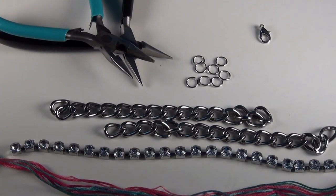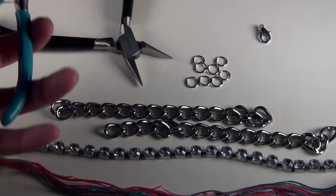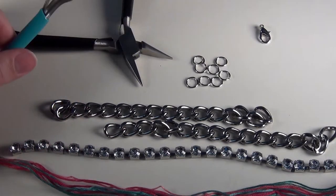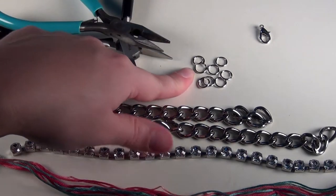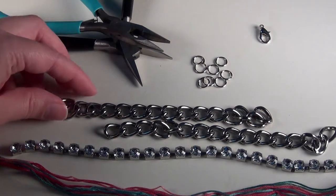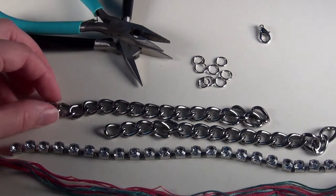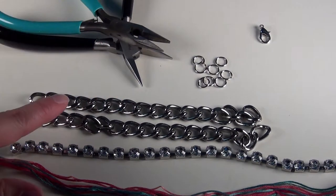For this you're going to need a pair of pliers. I'm actually using two because I happen to have them and it makes opening the jump rings easier. You'll need some jump rings, a lobster clasp, enough chain to go twice around your wrist, and then I've cut my chain into two lengths.